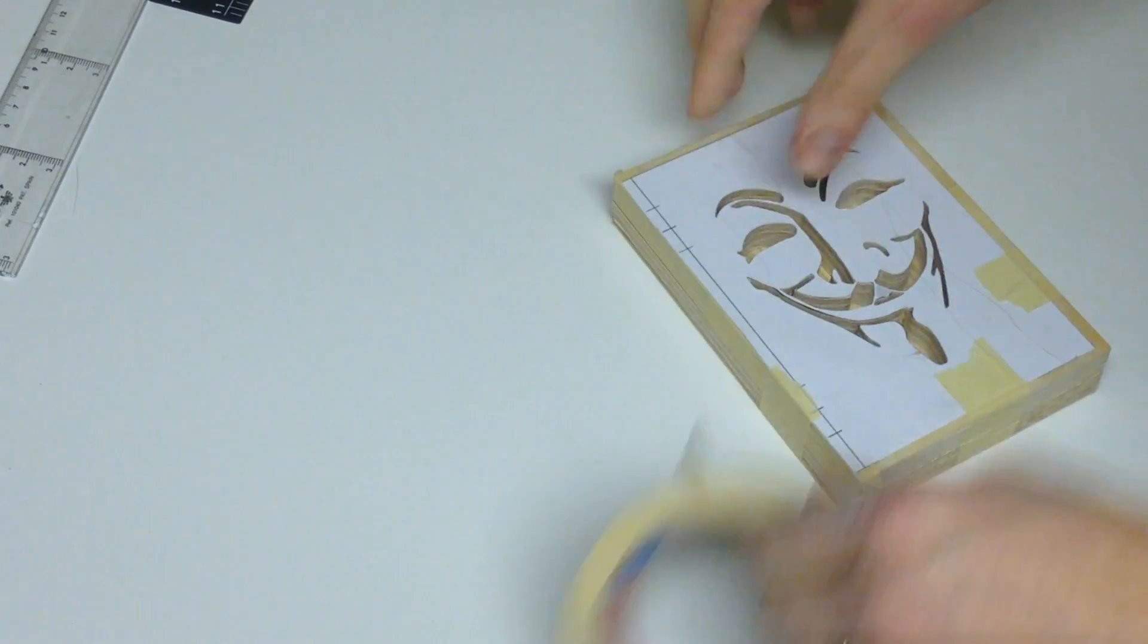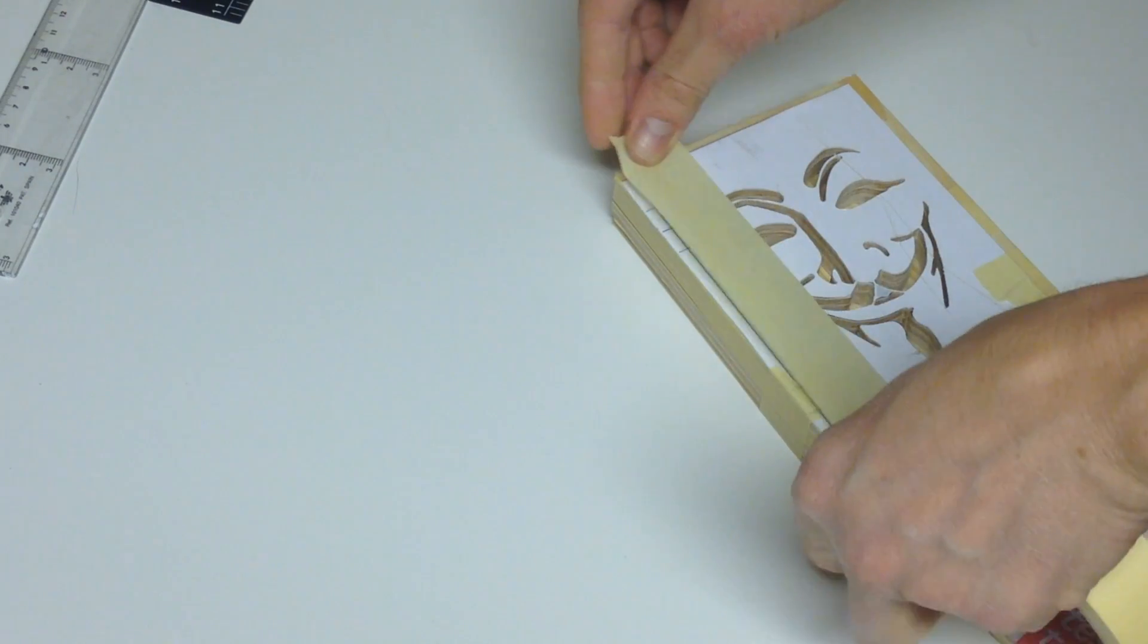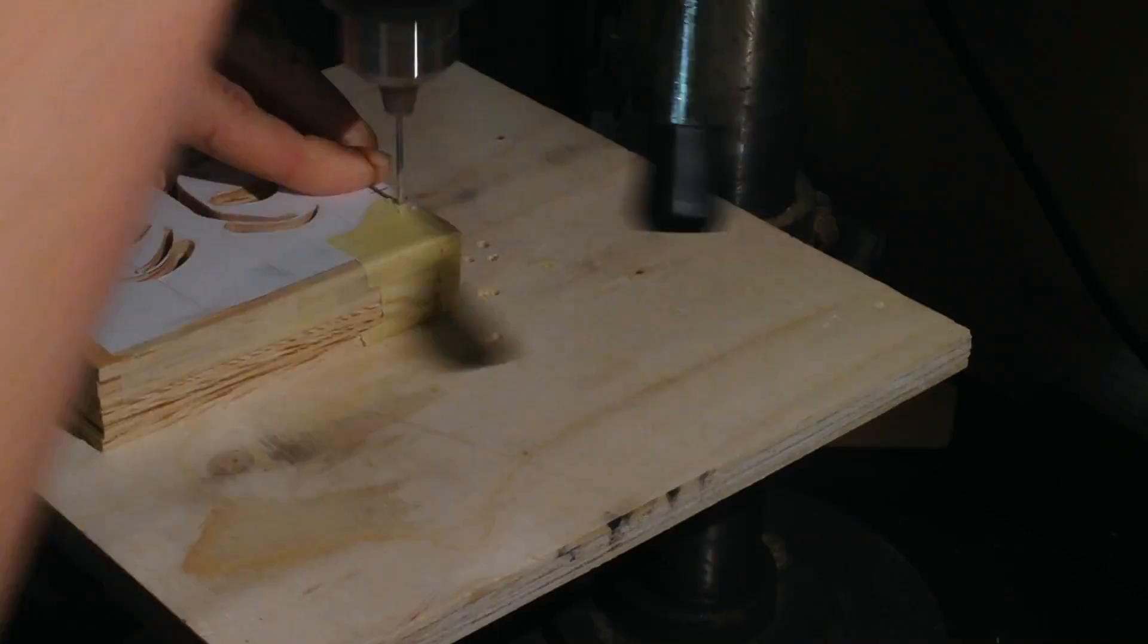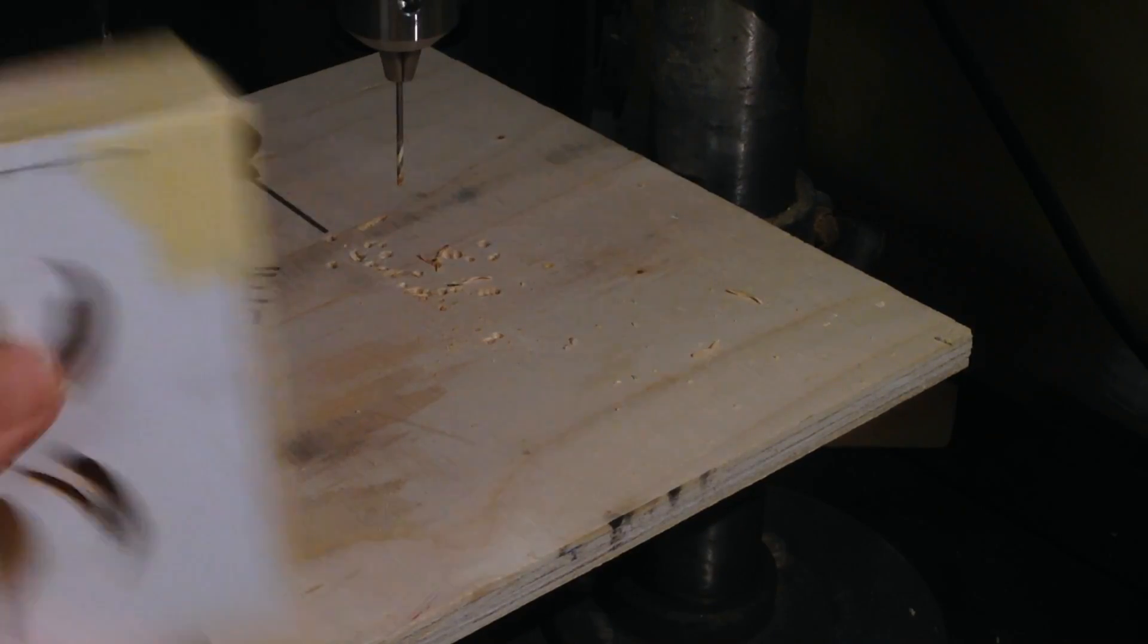I add the three back covers to the stack and keep it in place with masking tape. I then drill the holes that is used for binding later on.